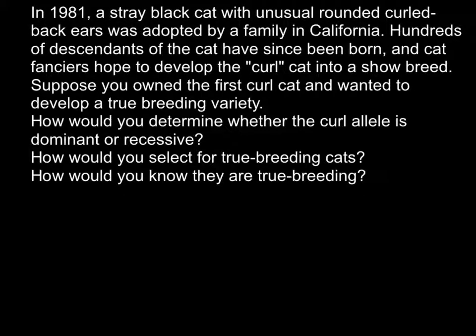Hi. Today's problem is: in 1981, a stray black cat with unusual rounded curled black ears was adopted by a family in California. Hundreds of descendants of the cat have since been born, and cat fanciers hope to develop the curled cat into a show breed. Suppose you owned the first curled cat and wanted to develop a true breeding variety. How would you determine whether the curled allele is dominant or recessive? How would you select a true breeding cat? And how would you know they are true breeding?